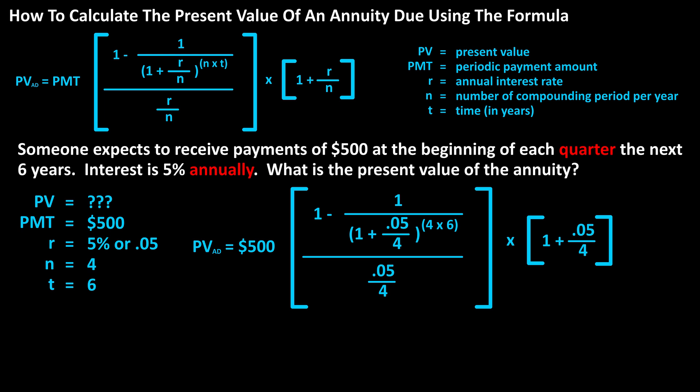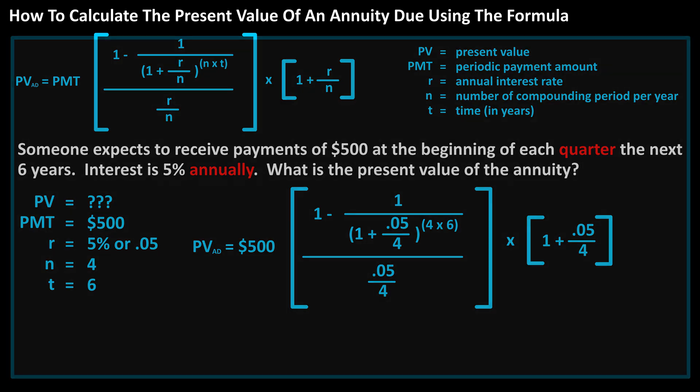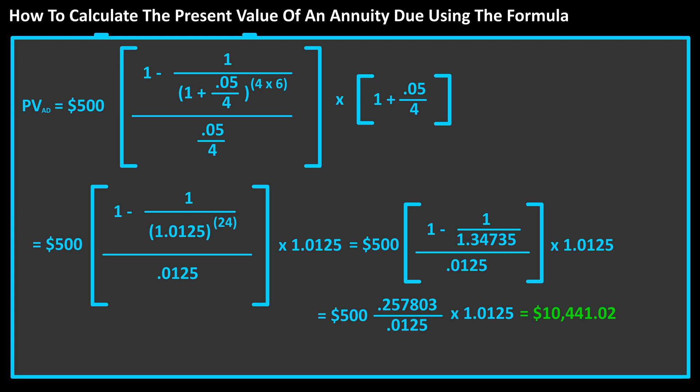Divided by 0.05 divided by 4, times the quantity 1 plus 0.05 divided by 4. I've written out all the calculations on the screen, as you see here, and we get a total of $10,441.02 as the present value of the annuity.